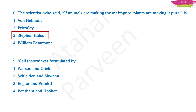Question number nine: cell theory was formulated by — cell theory was formulated by Schleiden and Schwann.